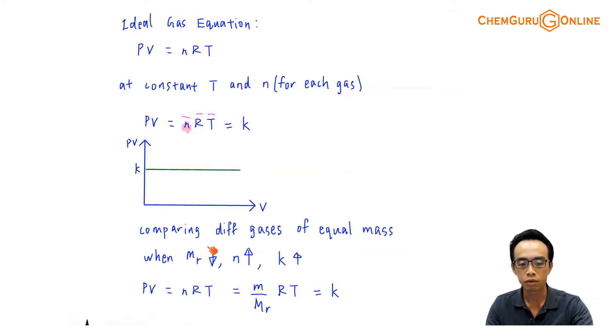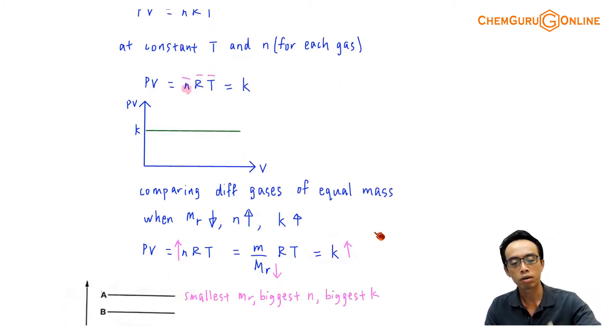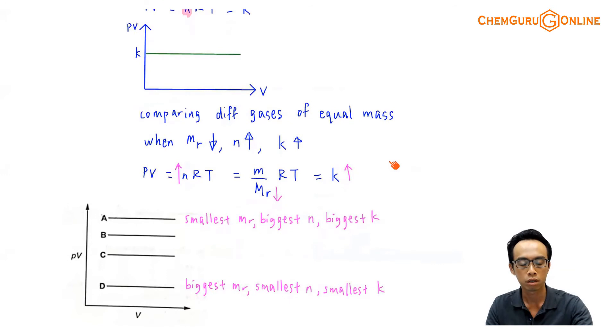Now, you'll notice, what we have is, when there's a decrease in the MR, when the MR is smaller, then for the same mass, I know that mass divided by a smaller MR, means that the number of moles increases, because the smaller the molar mass, then there'll be more moles of gas, and when N increases, NRT will also be bigger, which means that my K will also be larger.